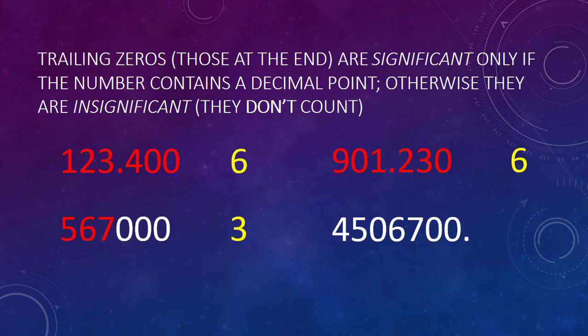Now this last one is a little sneaky. Notice we have a long number that ends with two zeros, and at the end is a decimal point. The decimal point would be there to indicate that we measured or rounded to that precision. This comes up a lot with our calculations, but it indicates that those two trailing zeros are going to be significant. So the zero between the five and the six is significant, those two trailing zeros are also significant because of the decimal place, and we have four non-zero numbers — so we have a total of seven significant figures.